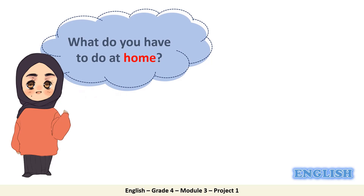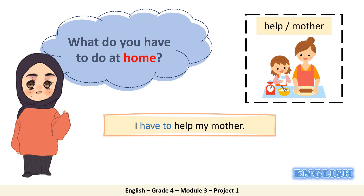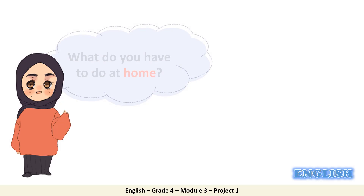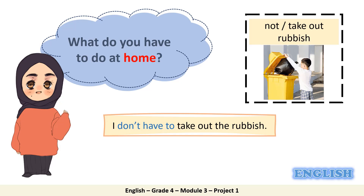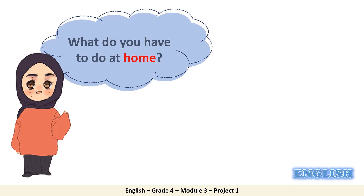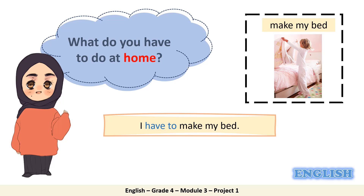What do you have to do at home? Look at the picture — help mother. I have to help my mother. Make sure everyone, you help your parents at home. What do you have to do at home? Not take out rubbish. I don't have to take out the rubbish. What do you have to do at home? Look at the picture — make my bed. I have to make my bed. It's your responsibility to make your bed and to tidy your room.